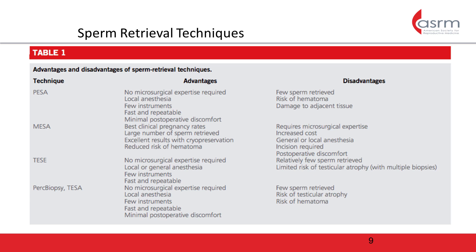TESA and PERC biopsies are performed using relatively similar techniques. A TESA involves placing a needle directly into the testis and aspirating until tubules are retrieved. A PERC biopsy involves using a core needle biopsy gun to obtain a small cylinder of testicular tissue from which sperm can be retrieved. Both techniques have the benefit of being performed under local anesthesia and without microsurgical expertise. They are fast, repeatable, and associated with minimal postoperative discomfort.